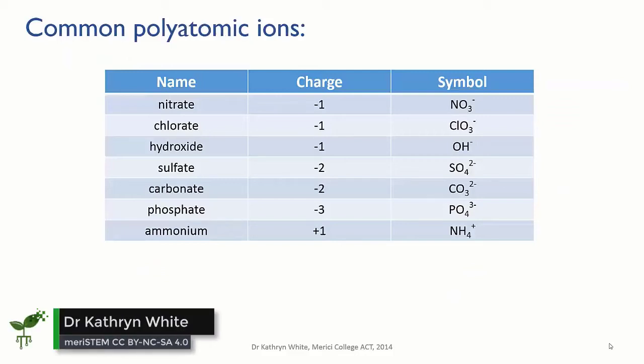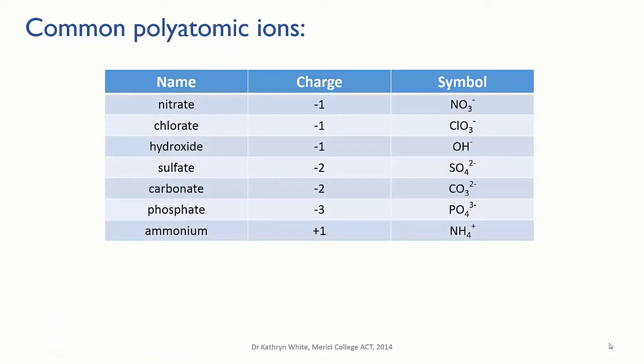Some ions are not monatomic like those we've seen, but polyatomic, meaning they're made up of several atoms bonded together. As with monatomic ions, a polyatomic ion has either too many or too few electrons relative to the number of protons in the atoms, so it has a charge.